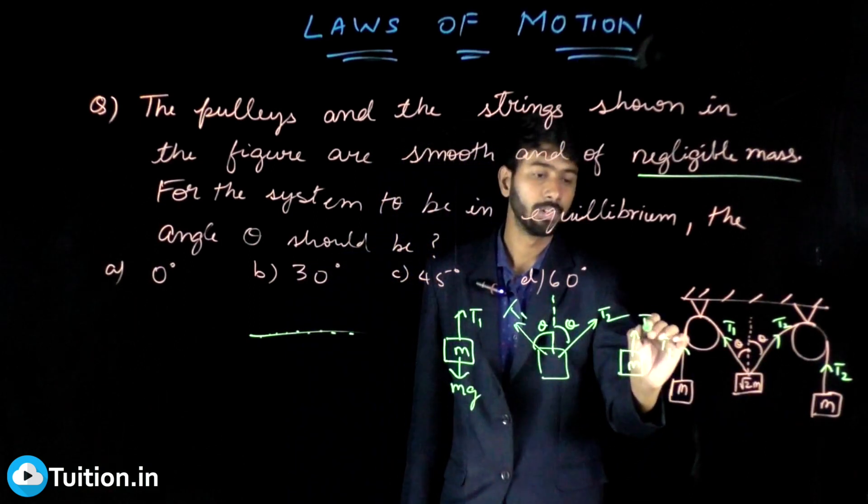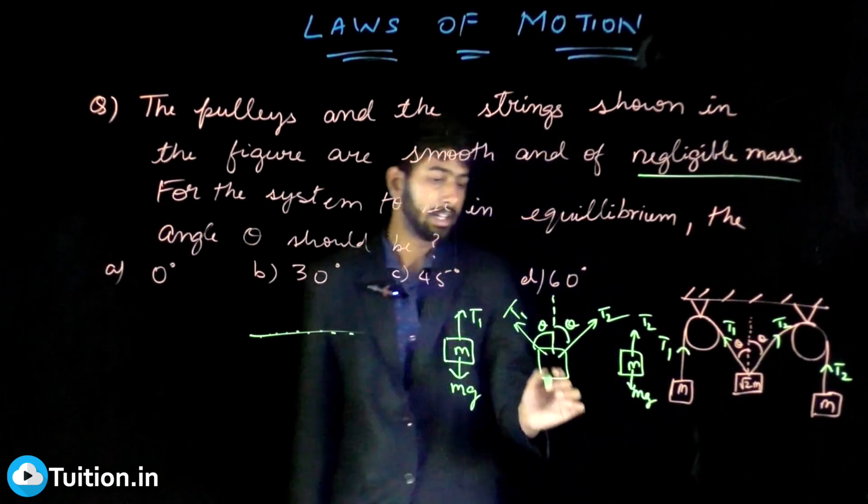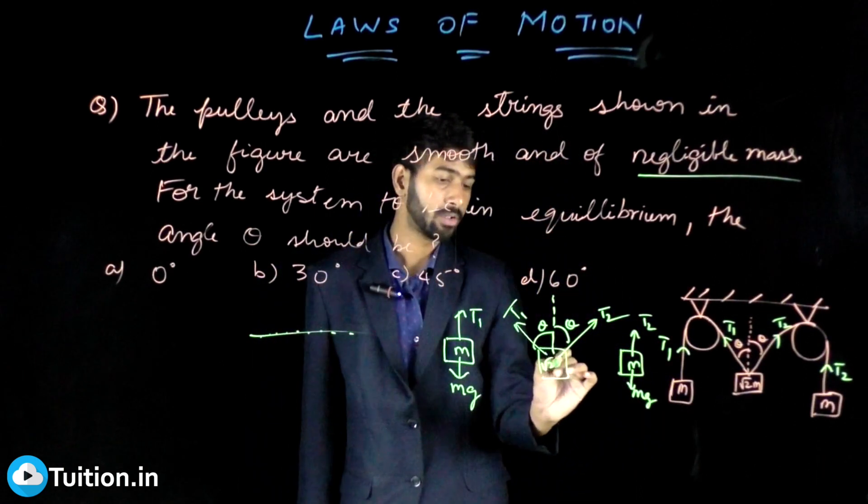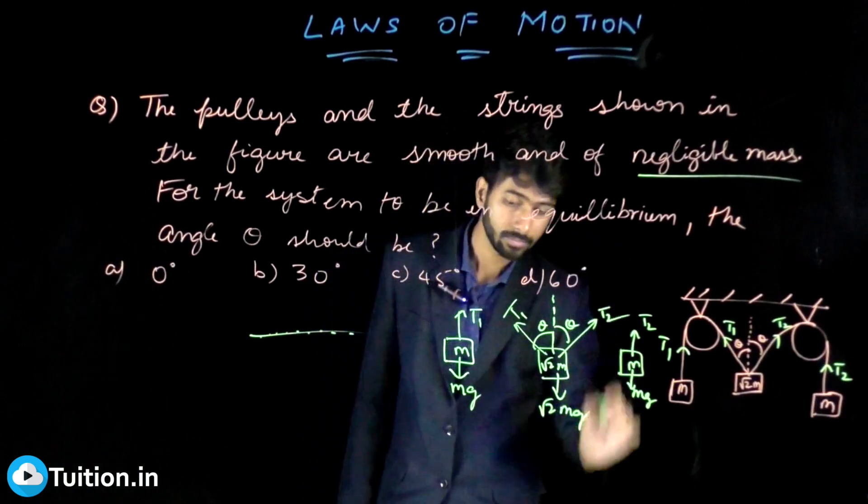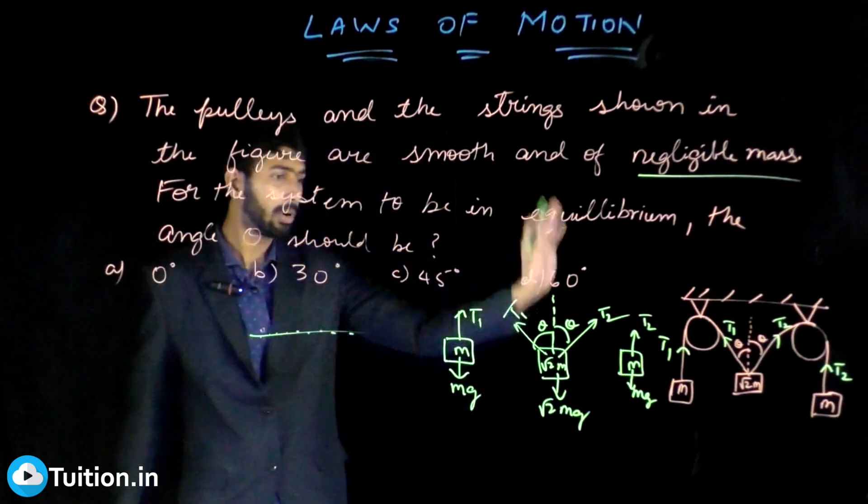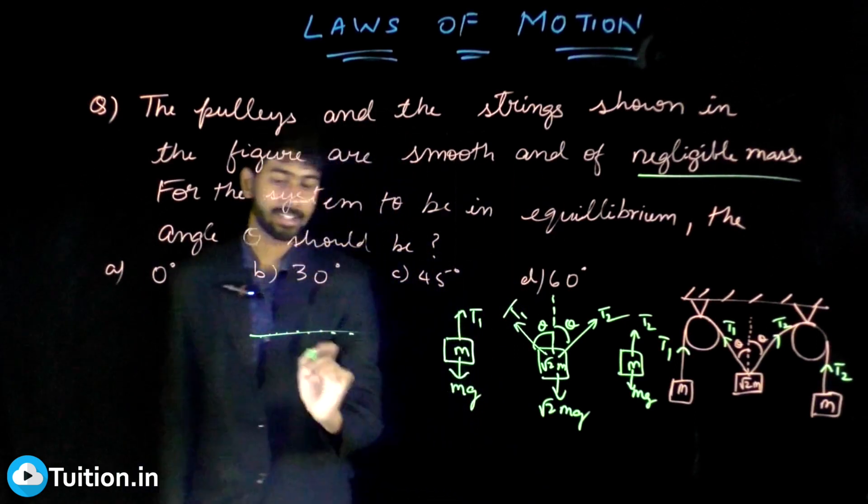And on this √2m also there is a √2mg acting. Let's look at the first body. None of the bodies are moving, so the first body also is at rest, so T1 equals mg only then it will be at rest—the forces have to balance.